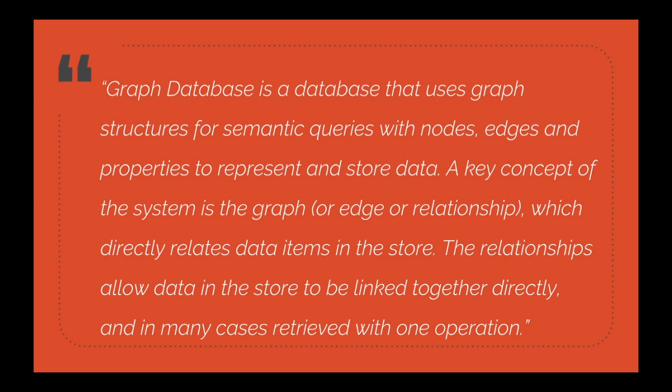The major concept of the graph database is its relationships, with which everything is linked together. These relationships are useful when we want to store data and directly link them as we store them. At a high level, a graph database stores data as nodes with relationships between them, and you can retrieve or place them however you want.